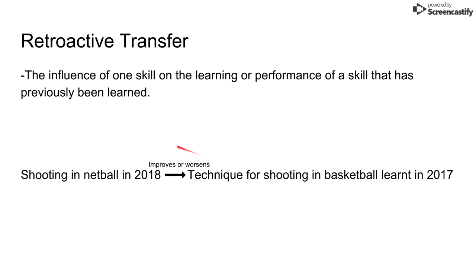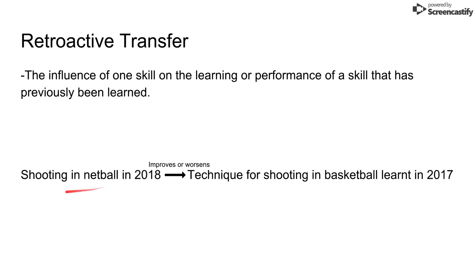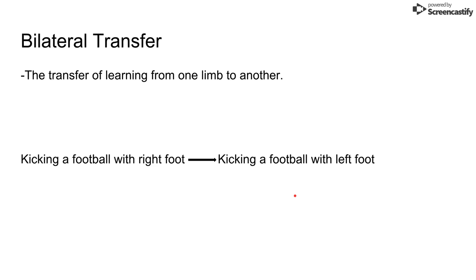Next is retroactive transfer. This is the influence of one skill on the learning or performance of a skill that has previously been learned. For example, if you're in 2019 practicing shooting a netball, your technique for shooting a basketball that you learned in 2017 is either going to get better or worse the next time you try it, because the new skill you've learned may weaken the older one as your technique has changed.